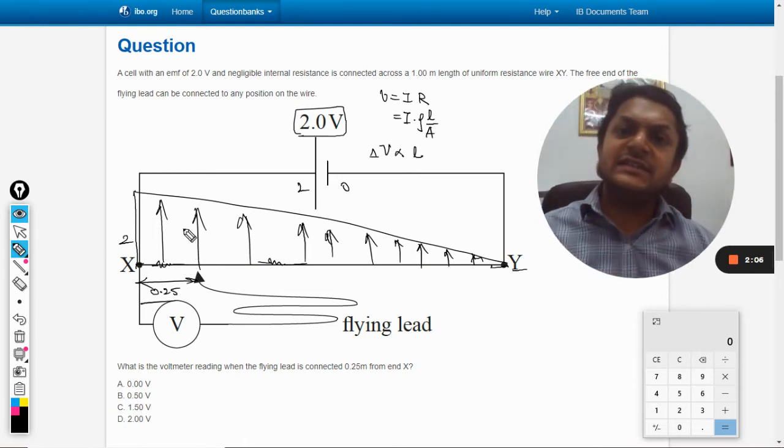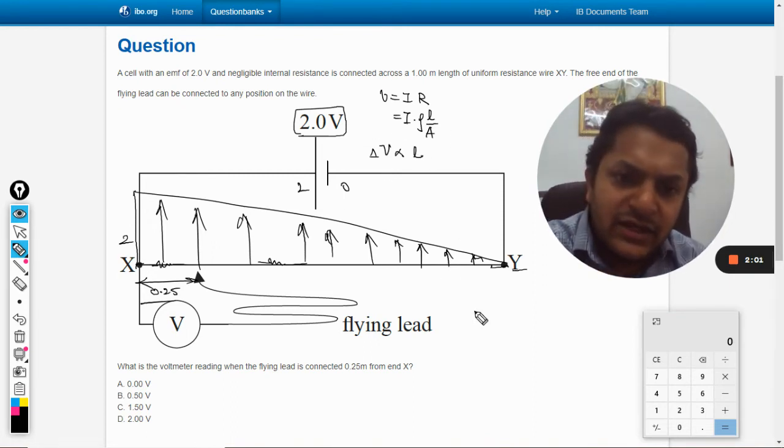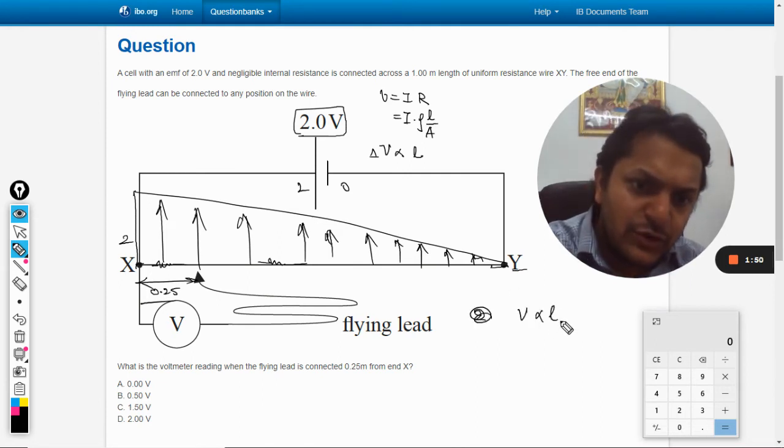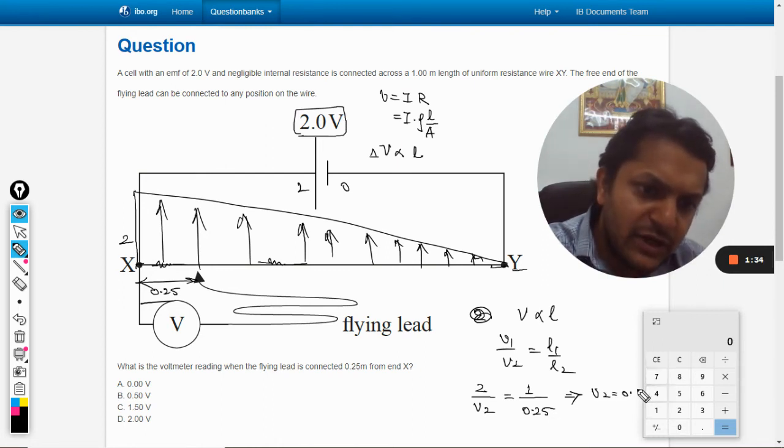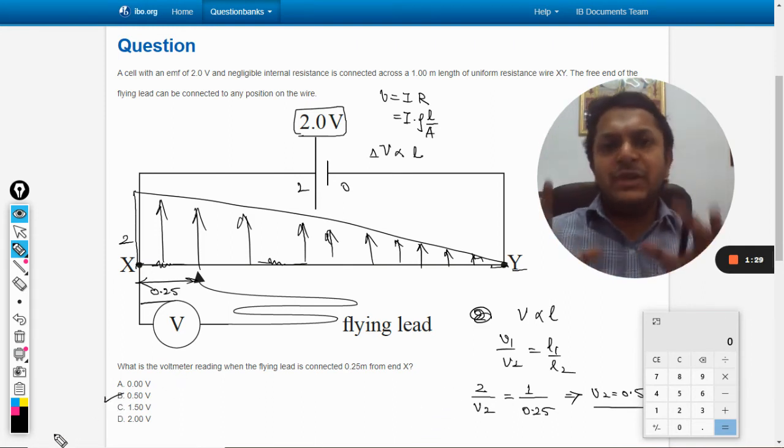We take the ratio: it will be 2 volt if the length is 1 meter. V is directly equal to L, so V1 by V2 is equal to L1 by L2. V1 is 2 volt, V2 we don't know, L will be taken as 1, and now we are taking 0.25, so V2 value is coming out to be 0.5.